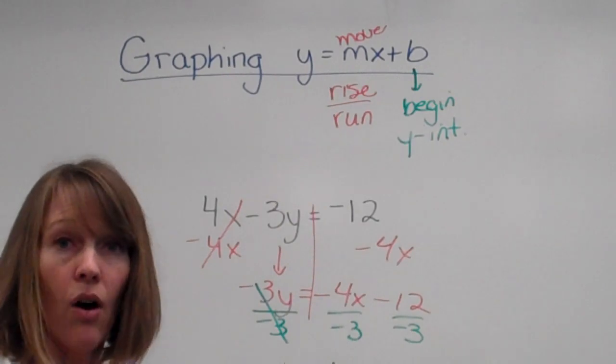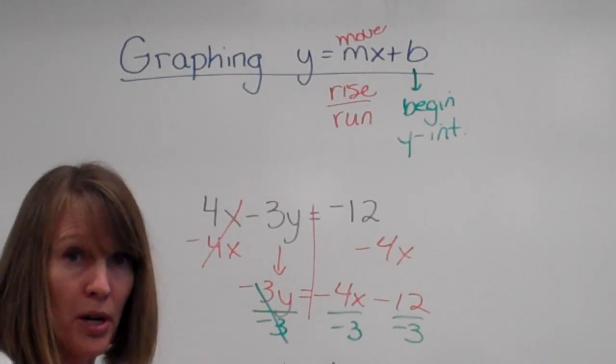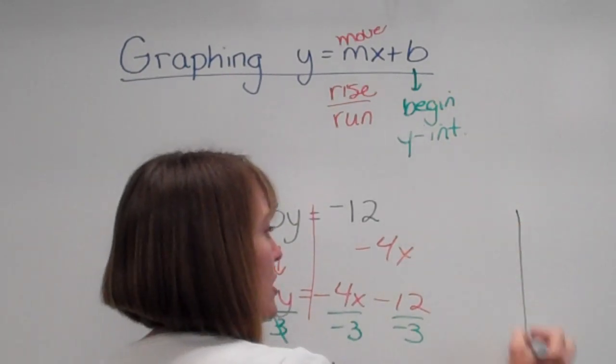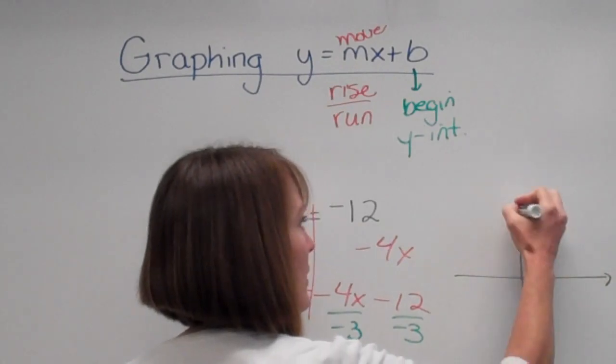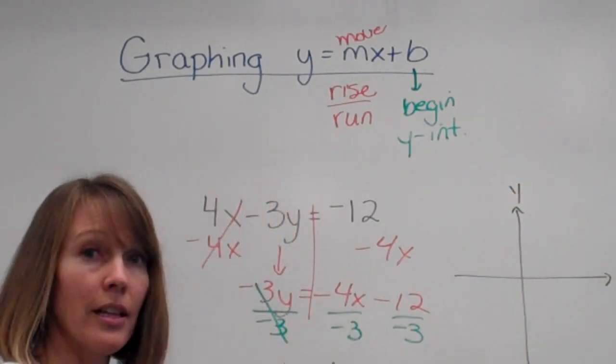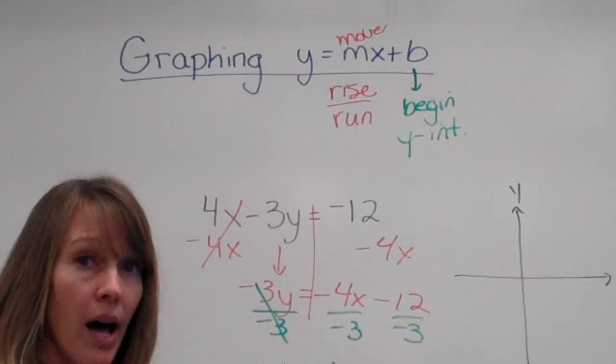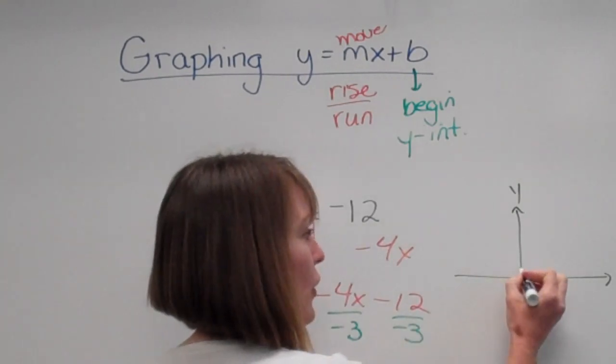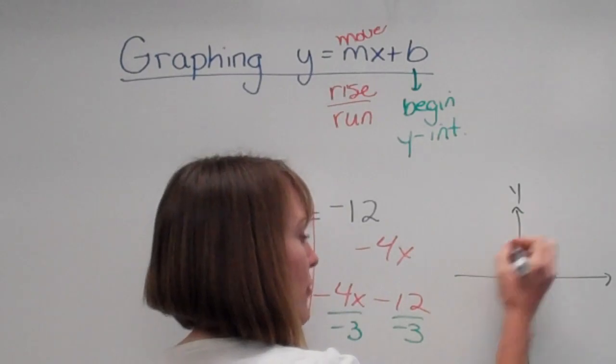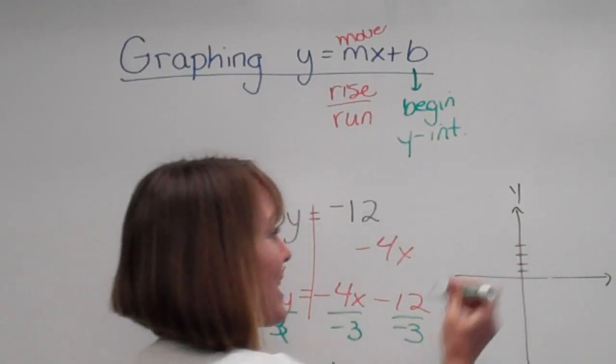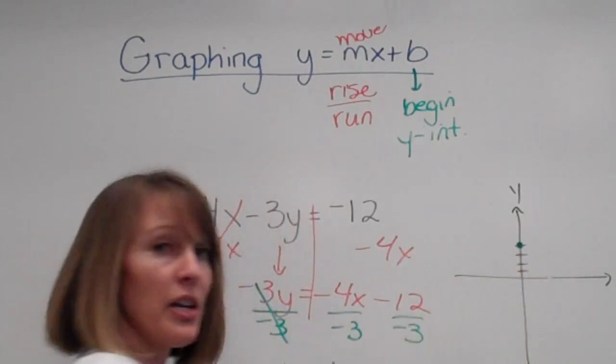Okay, now, on your graph paper, which is all pretty and perfect, you would now start with the loner number. You're going to start or begin with positive 4. So on your graph paper, positive 4, that would be your first beginning point. Right? Your y-intercept.